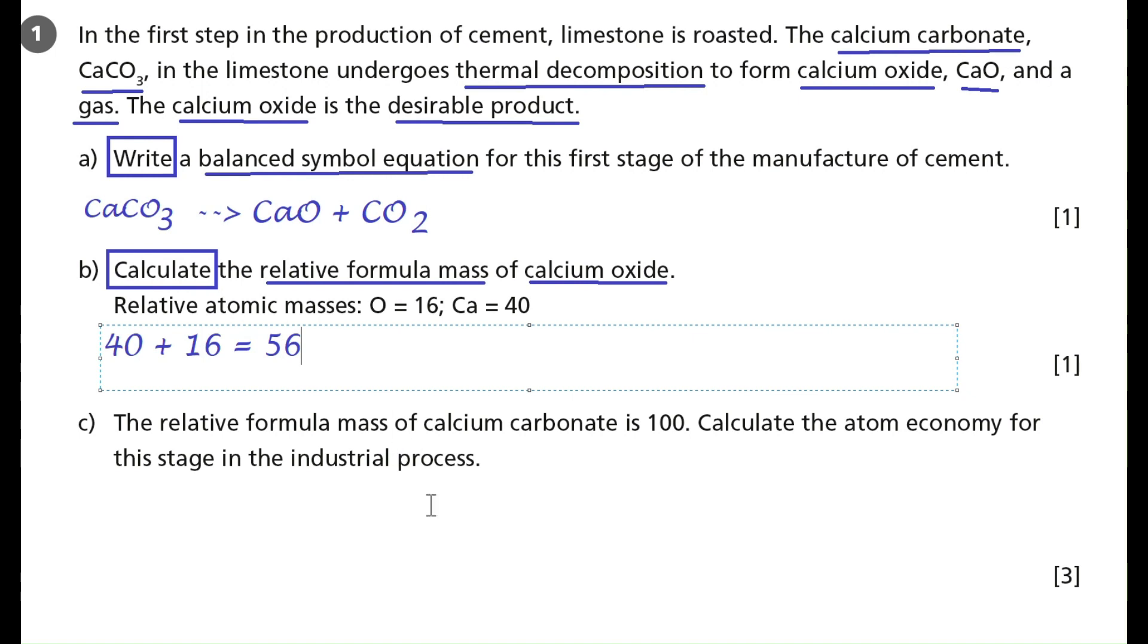OK, let's look at the last part of this question, part C. The relative formula mass of calcium carbonate is 100. Calculate the atom economy for this stage of the industrial process. So what's the command word here? The command word here is to calculate. What key information have I been given? I've been given the relative formula mass of calcium carbonate. And what they want me to do is calculate the atom economy.